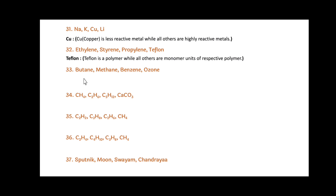Next: Butane, Methane, Benzene and Ozone. Among these, Ozone is the odd one out. Since Ozone is an inorganic compound, while all others — Butane, Methane and Benzene — are organic compounds.